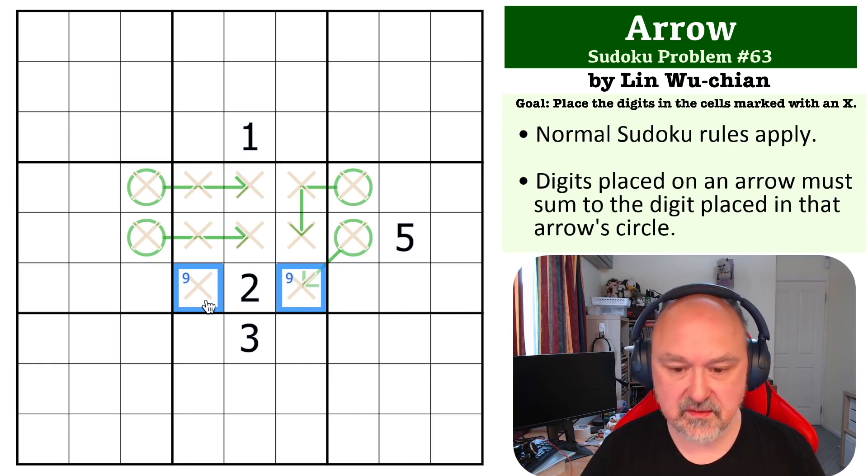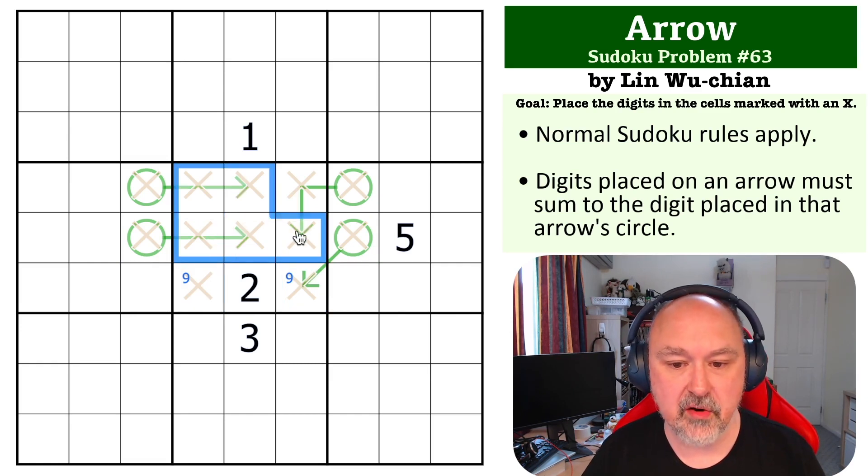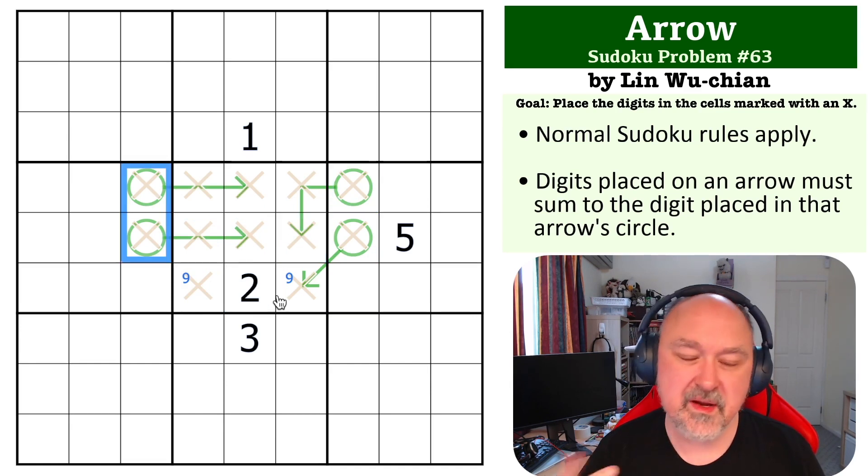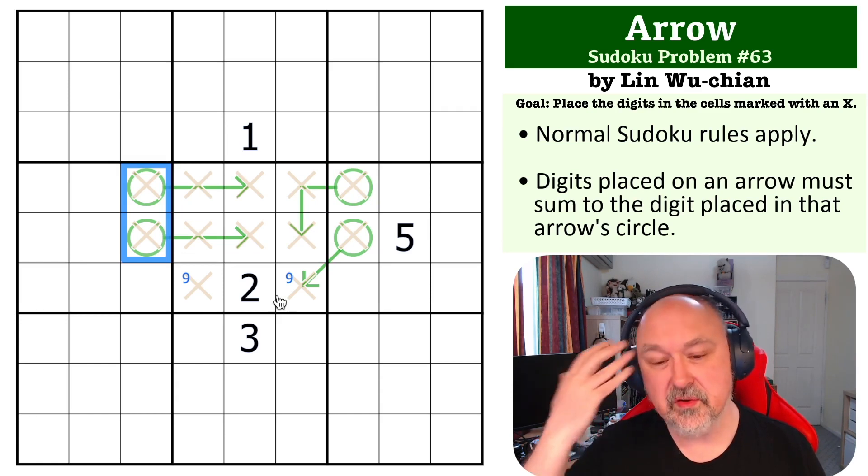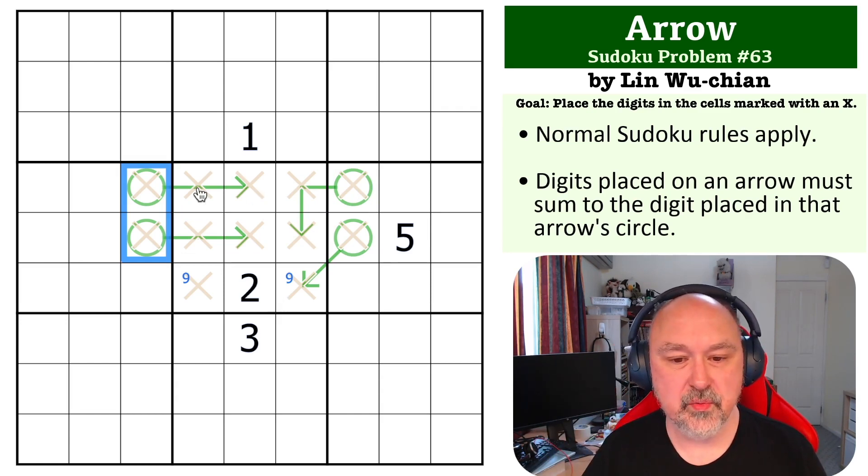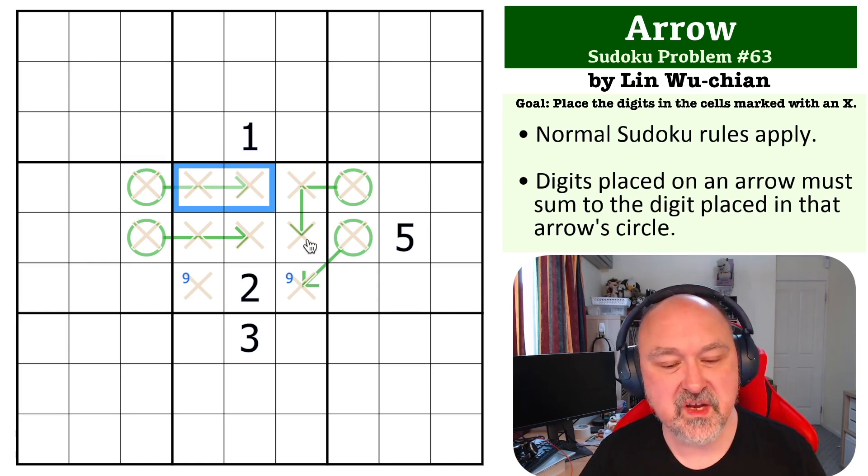It cannot go on a two-cell arrow because in order to go into a single cell arrow it would be nine-zero to sum to something. But if you start looking at eight you start running into other issues, because eight could go with one to sum to nine and could go almost anywhere.